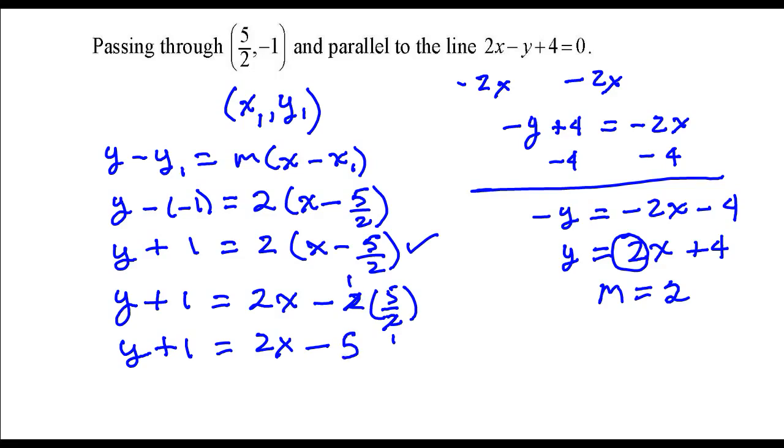So general form is when you have all the terms on one side of the equation and 0 on the other side. So I'm going to subtract 2x from both sides. So I have y minus 2x, and then I'm going to add 5 to both sides. So that's going to give me plus 6, and then on the right-hand side is 0. And that's the equation of the line in general form.